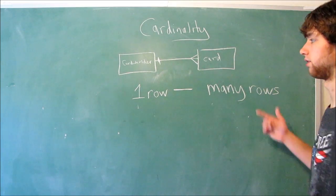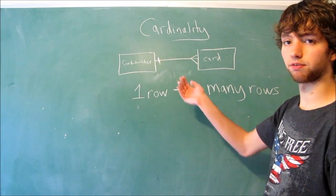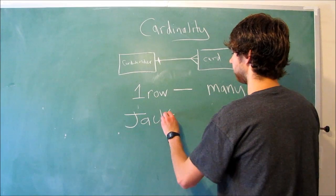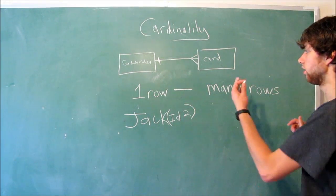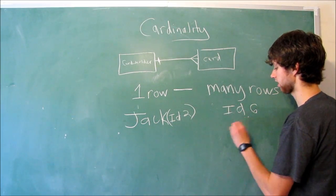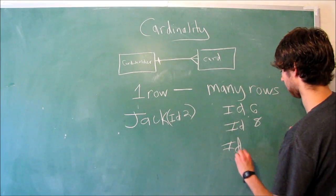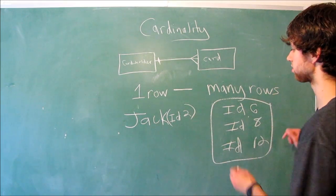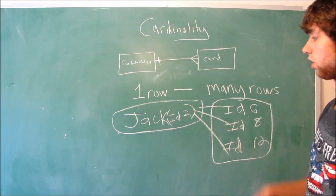Now, what does this exactly mean? It means one row can be connected with many rows in another table — not necessarily the whole table, but the rows within it. So we could think of a specific card holder named Jack with an ID of 2, and we could have many rows over here in the cards table: a card with ID 6, ID 8, ID 12. You can see this guy has a lot of credit cards — all of these rows connected to one individual row in the card holder table.